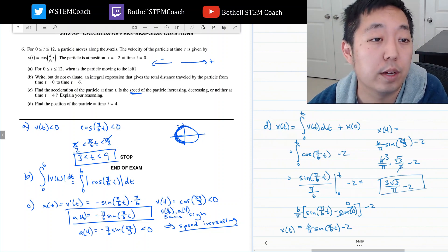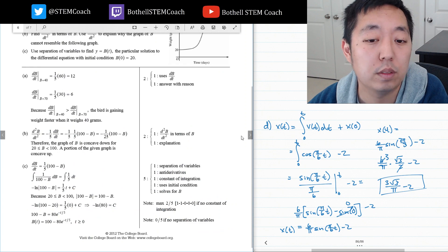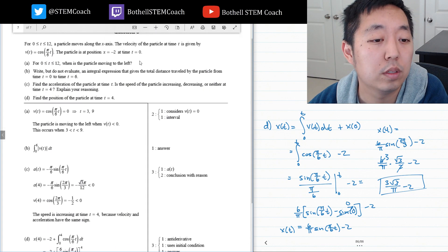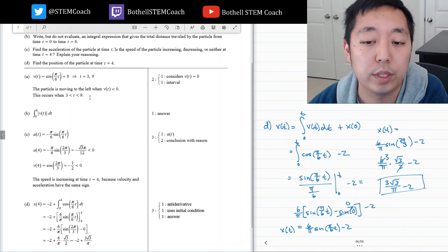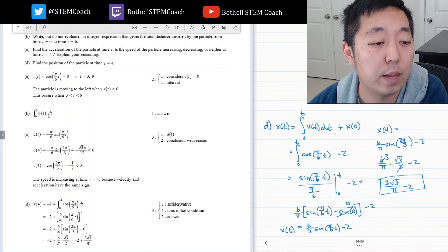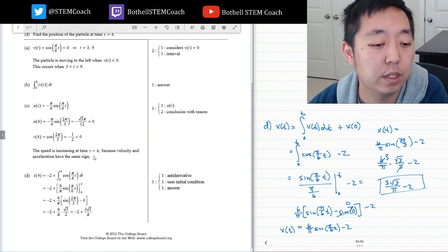Let's see what we did on that one. Between 3 and 9, good. The integral absolute value of v of t dt. The speed is increasing because velocity and acceleration have the same sign. And negative 2 plus 3 root 3 over pi, which is what I got there. So that wraps up the AP Calculus 2012 free response questions.